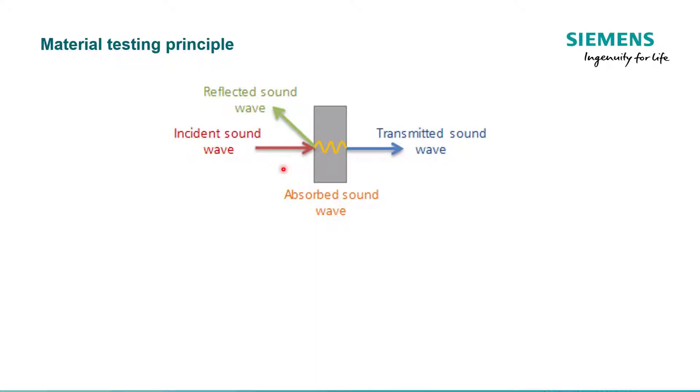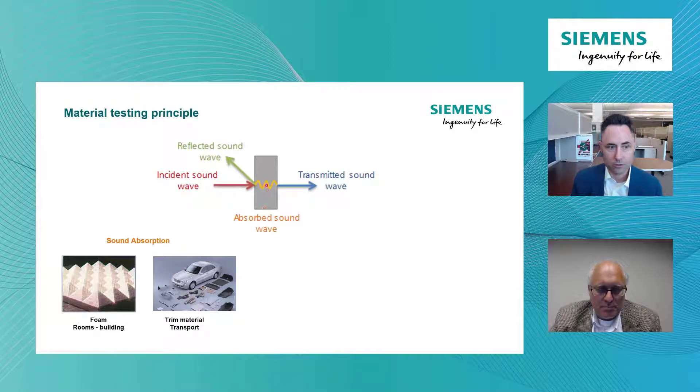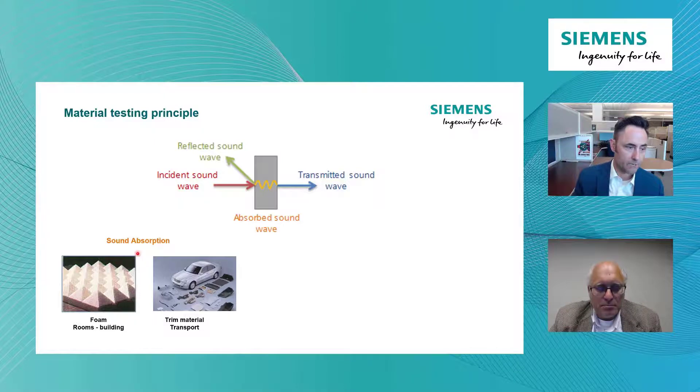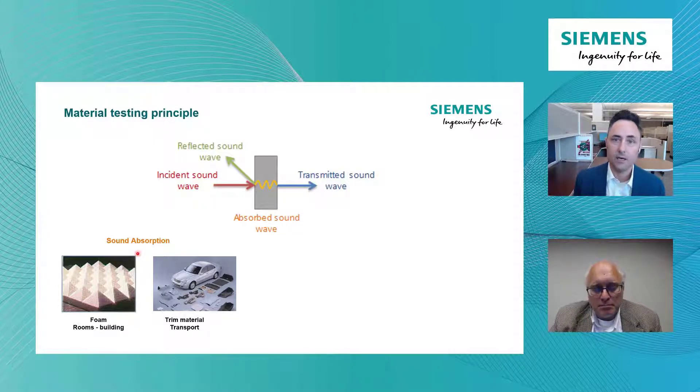So the first thing we're going to talk about is absorption, because of these three, we can really only control the amount of absorption or the amount of transmission. And by controlling these two, we're ultimately going to control how much gets reflected. In absorption, I'm trying to trap as much of the sound energy as possible inside the material. This will typically be open cell foams, carpets.